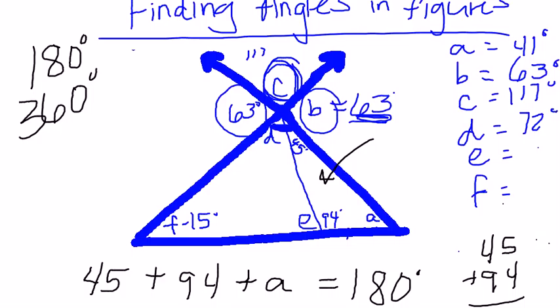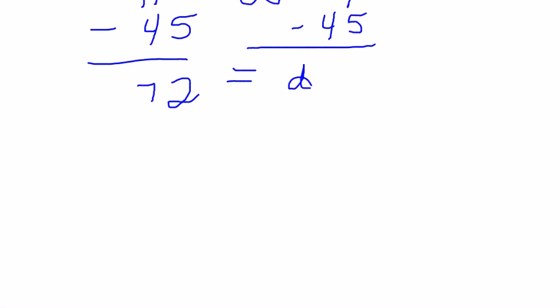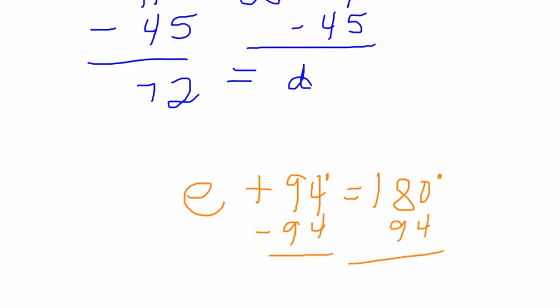Now I can find E, which is right here. Using the definition of supplementary angles, I know that E plus 94 has to equal 180 degrees. Subtracting 94 from both sides, E equals 86 degrees.